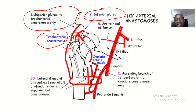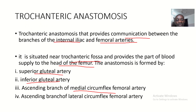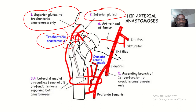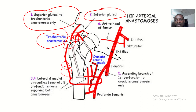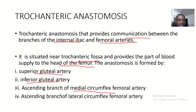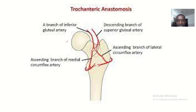It is also formed by the ascending branch of the lateral circumflex femoral artery. This is the lateral circumflex artery, and the branch going up is the ascending branch. That covers the trochanteric anastomosis, and we'll now move to the cruciate anastomosis.